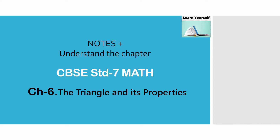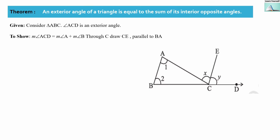Welcome to Learn Yourself. The theorem statement is: an exterior angle of a triangle is equal to the sum of its interior opposite angles. We are talking about this complete exterior angle, and its measure will be equal to the sum of angle 1 and angle 2. When we add angle 1 plus angle 2, we get this complete angle, that is angle ACB.